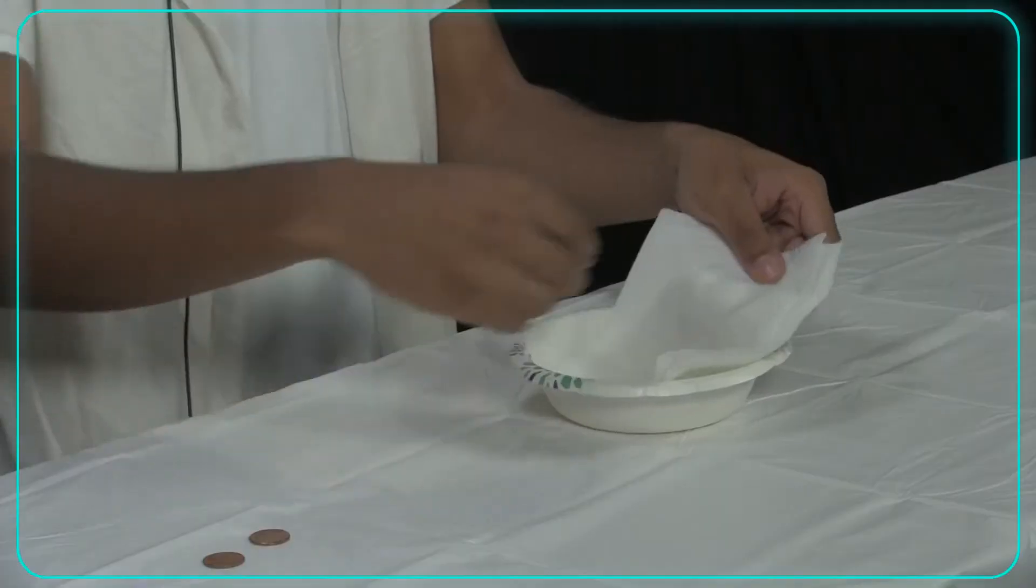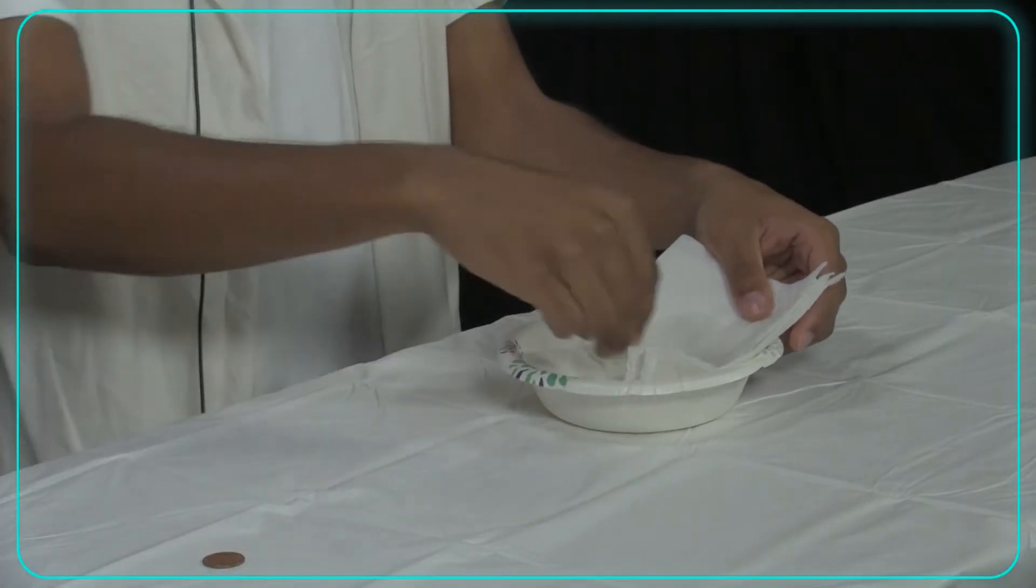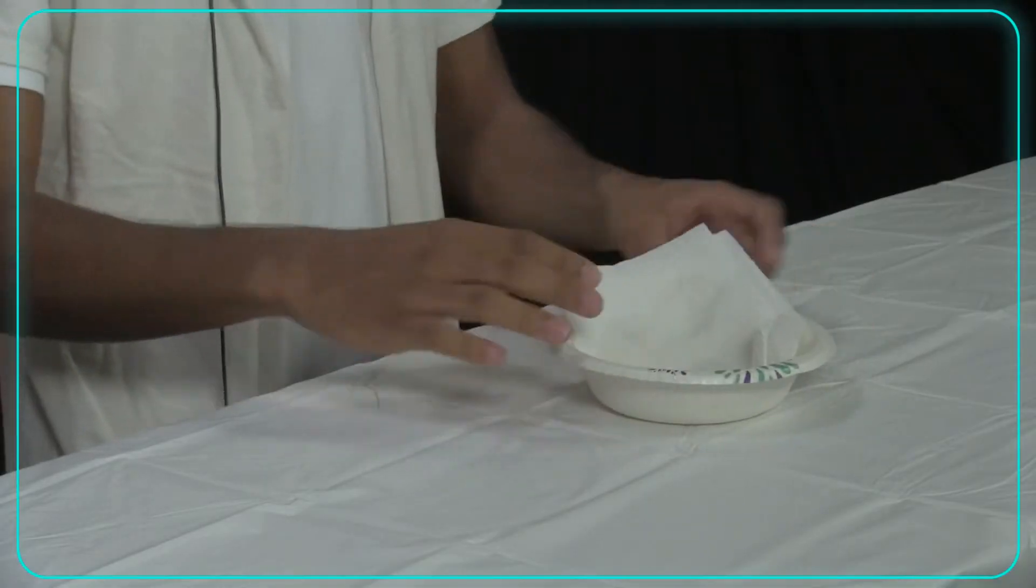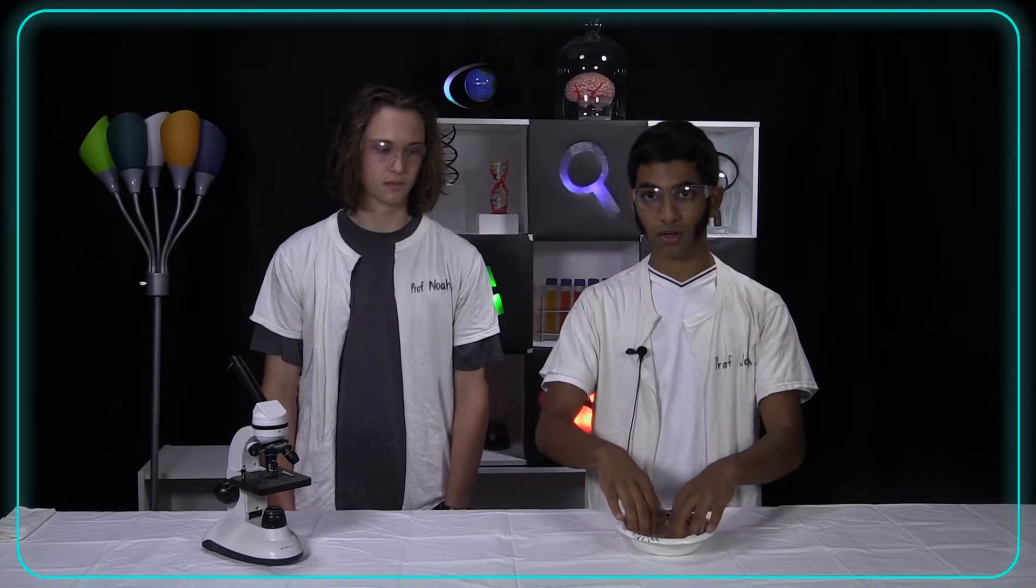Now this is pretty simple. We're going to take our pennies and we're going to layer it in just like that. The final step is to leave it in this dish overnight.